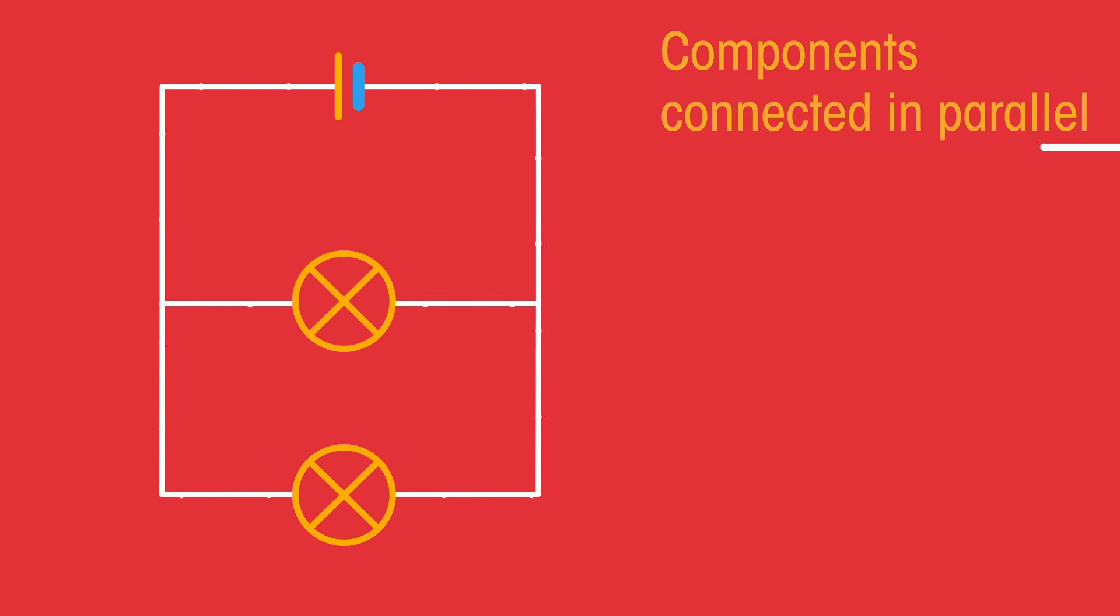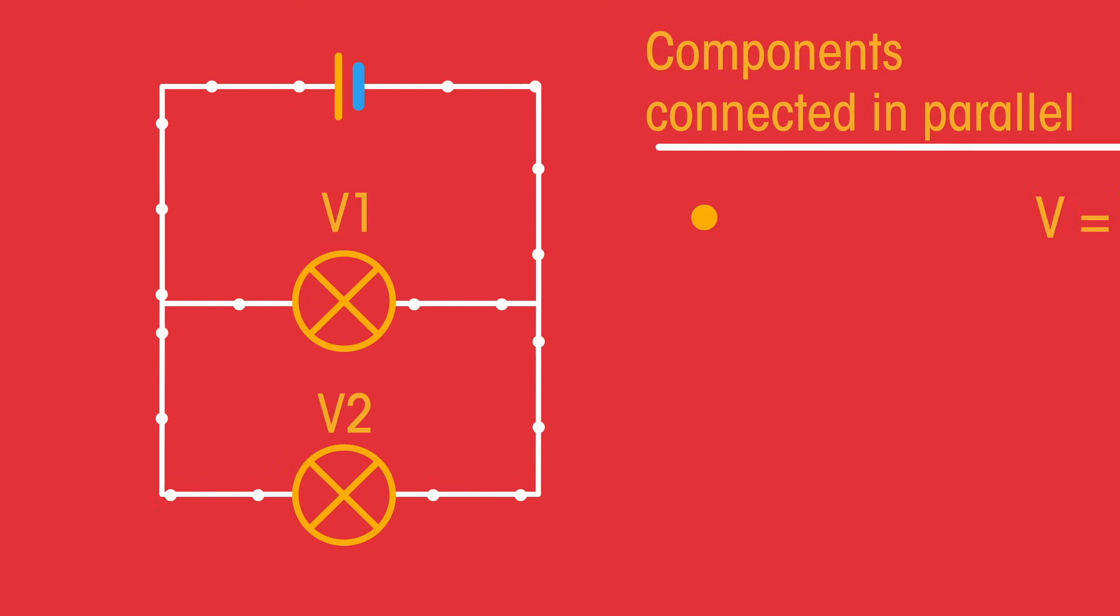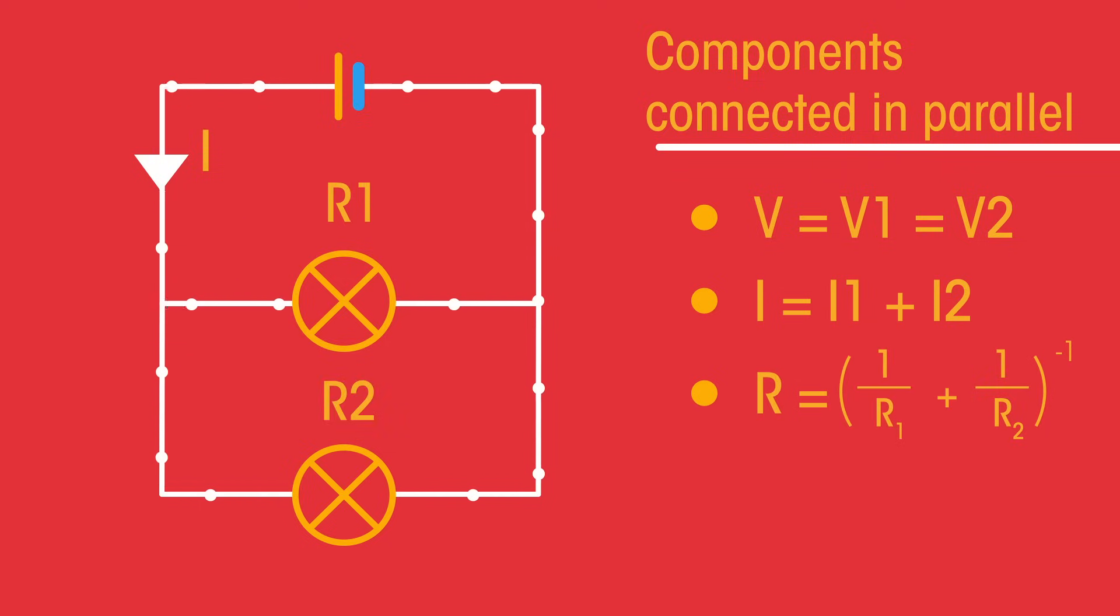For components connected in parallel, the voltage or potential difference across each component is the same. The total current through the whole circuit is the sum of the currents through the separate components, and the total resistance of two resistors is less than the resistance of the smallest individual resistor.